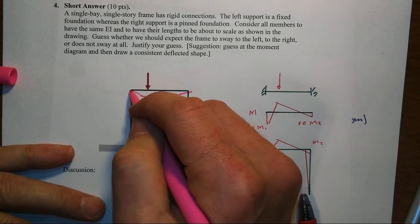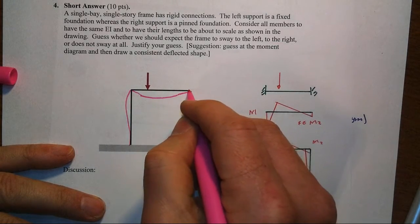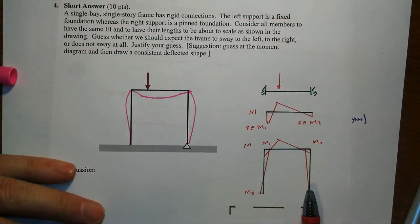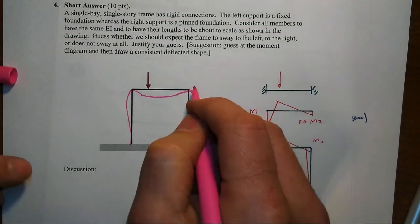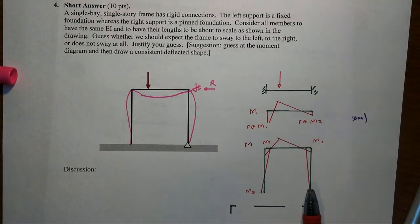Now I'm going to temporarily show it as though it doesn't sway at all. We're going to get reverse curvature in the left column and we're just going to get single curvature in the right. If it didn't sway, the question becomes, well, what force do we have to hold it there so that it doesn't sway?